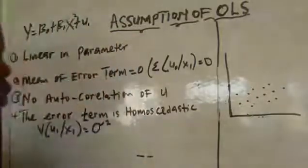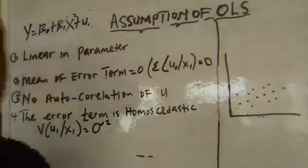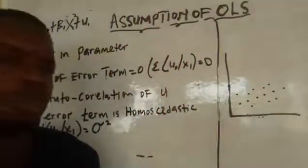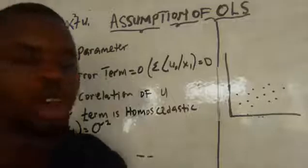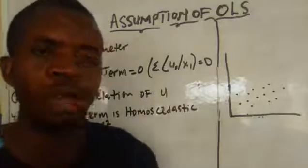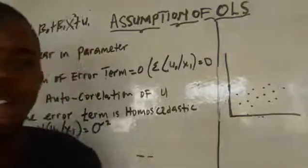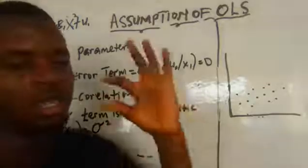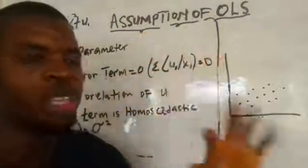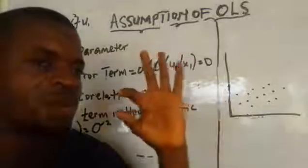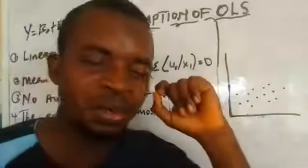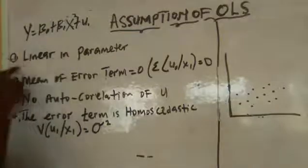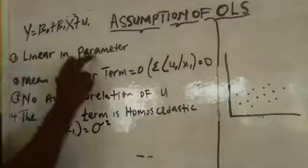The first thing we do if we want to use ordinary least squares is to preview your model. But that is where the problem starts, because if you don't take care of how you build your model, you might have a problem at the end. You must ensure that the model you are building is linear in parameter. That is a very, very good assumption — your model must be linear in parameter.